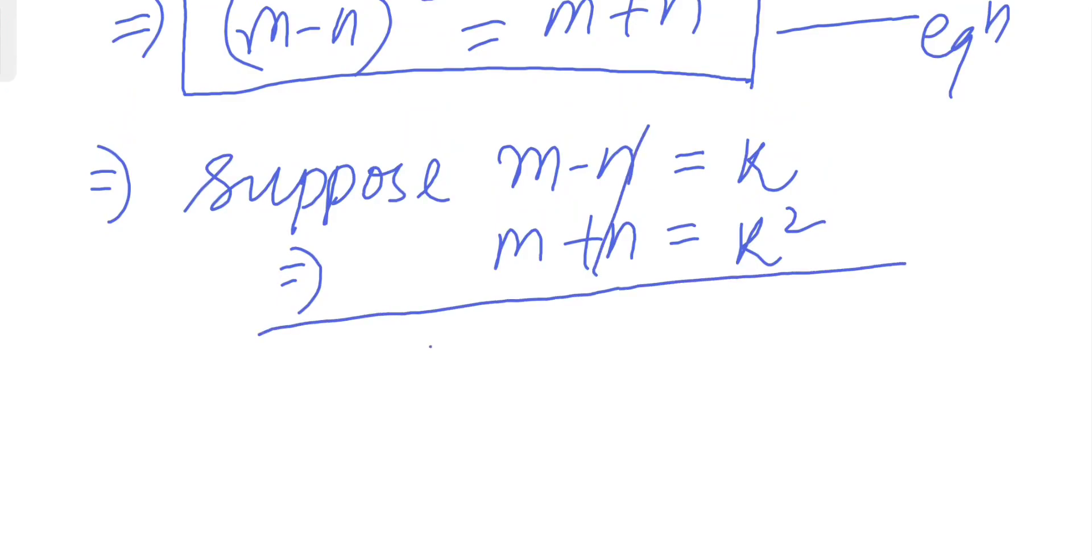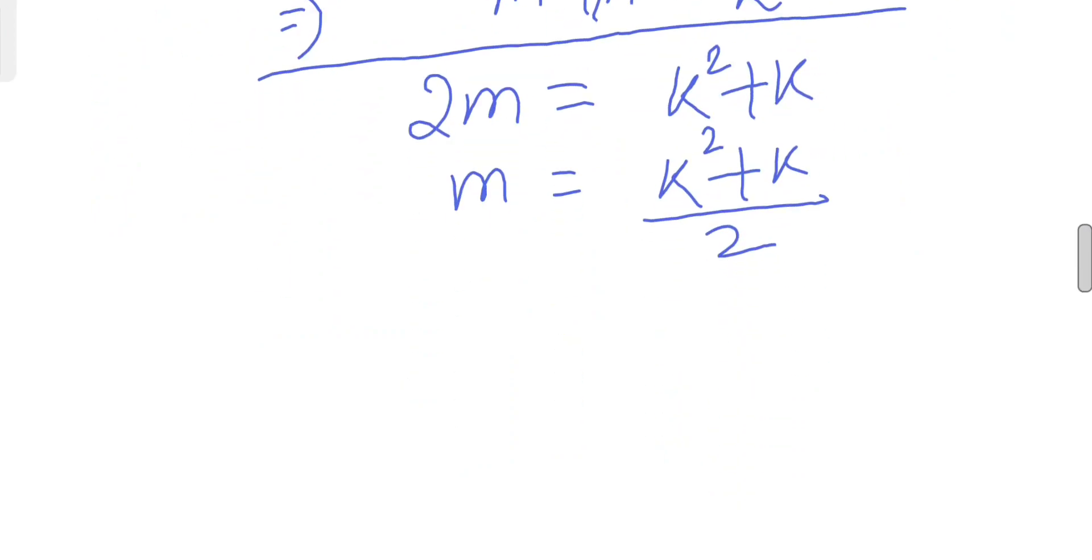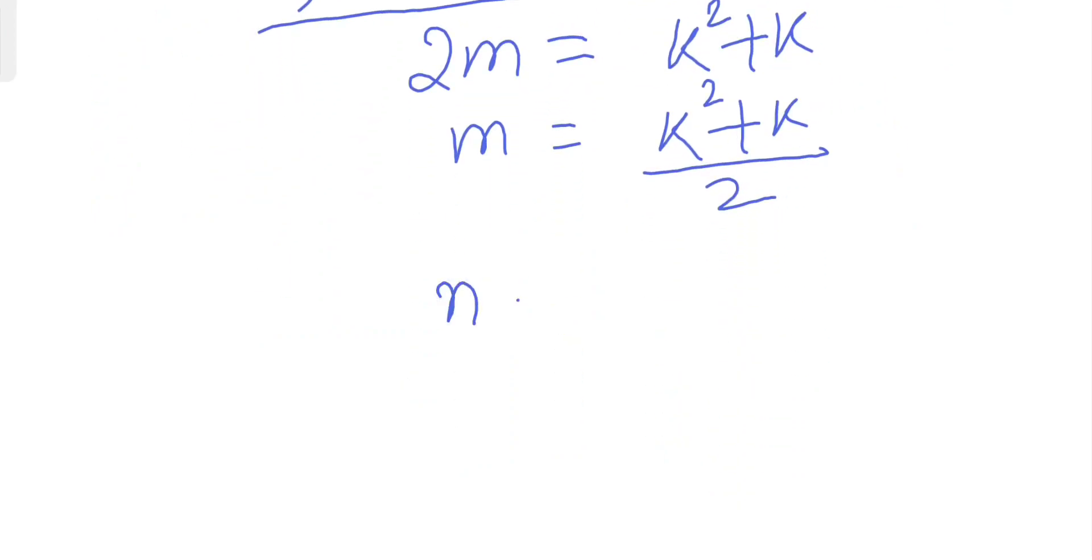You will get m equals (k²+k)/2, and if you solve for n, this gives us (k²-k)/2.